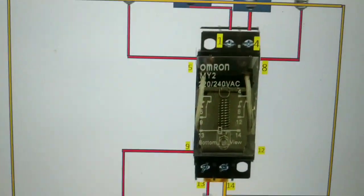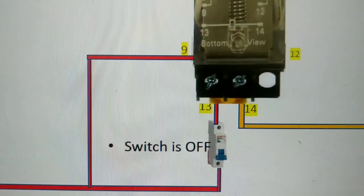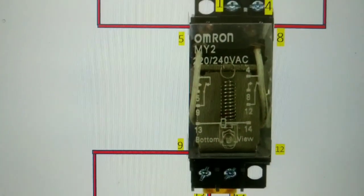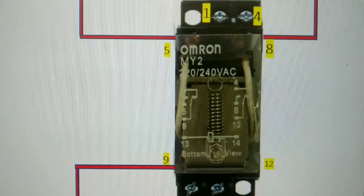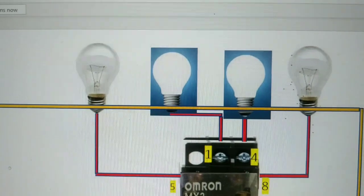Then we have the relay coil. The relay coil is energized. We have to use the power supply to close the circuit.